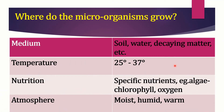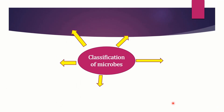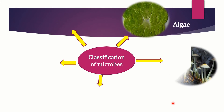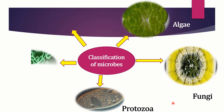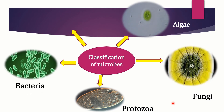Let us understand where microorganisms grow. The medium includes soil, water, decaying matter, etc. The temperature required is 25 to 37 degrees. Specific nutrients are needed — for example, algae require chlorophyll. The atmosphere should be moist, humid, and warm. According to shape and life processes, microorganisms are classified as algae, fungi, protozoa, bacteria, and viruses.